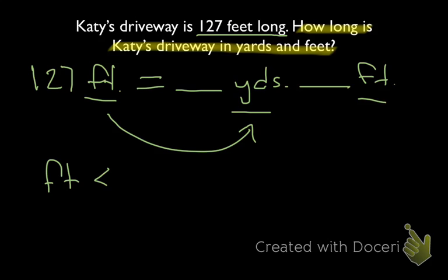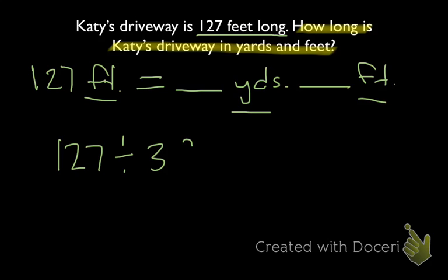Feet are smaller than yards. So since we're changing from smaller to bigger, we're going to want to divide. What do we divide? We take our original number 127. We're going to divide that by the number of feet. There are 3 feet per yard.